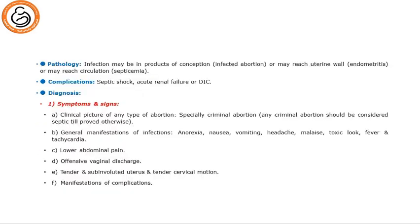For pathology: infection may be in the products of conception — called infected abortion — or may reach the uterine wall causing endometritis, or may reach the circulation resulting in septicemia. Complications: septic shock, acute renal failure, and DIC. For diagnosis: clinical picture of any type of abortion as mentioned — infection can occur on top of any type, especially criminal abortion, which should be considered septic until proved otherwise. General manifestations of infection include anorexia, nausea, vomiting, headache, malaise, toxic look, fever, and tachycardia. There is lower abdominal pain, offensive vaginal discharge, and tender sub-involuted uterus with tender cervical motion, with manifestations of complications either septic shock or DIC.